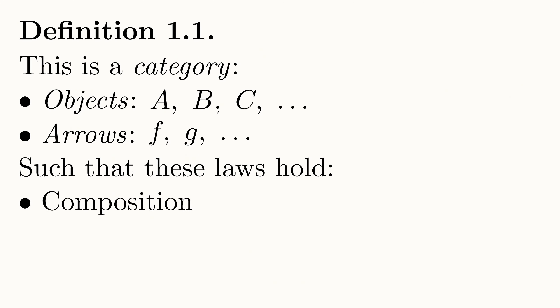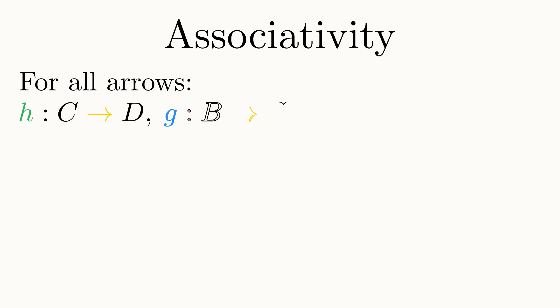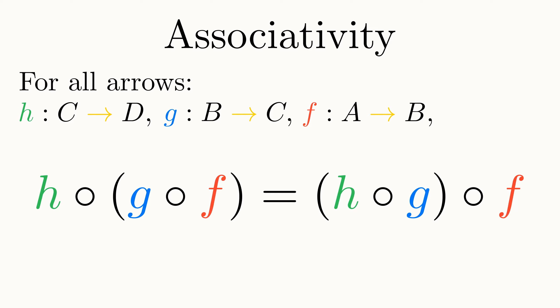Now, for composition to be mathematically useful, we need to impose some extra rules on our category. Firstly, we require that composition is associative. Put mathematically, this says that for any three composable arrows h, g, and f, the arrow h follows the composition of g and f must equal the same arrow as h composed with g follows f.